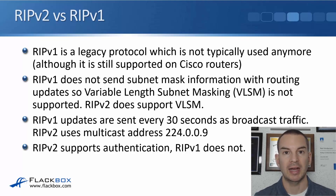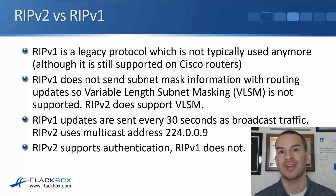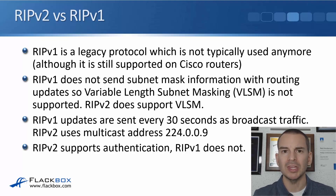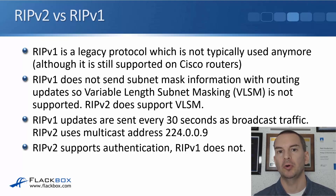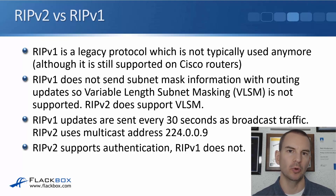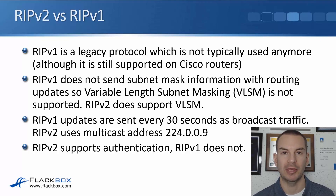RIP version 1 had even worse limitations than RIP version 2. It doesn't send subnet mask information with routing updates, so variable length subnet masks — VLSM — are not supported. You don't have to use classful networks with RIP version 1; for example, all of your networks could be a /28 and that would work fine, but you couldn't mix /24, /28, and /30 networks — they all have to be the same.